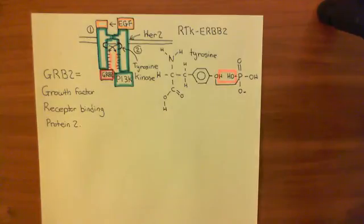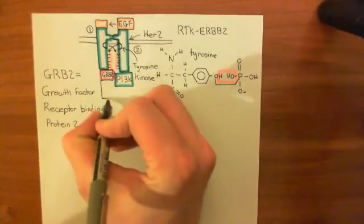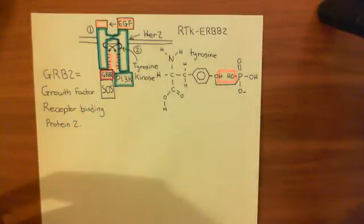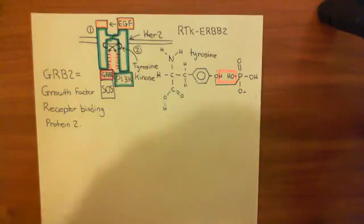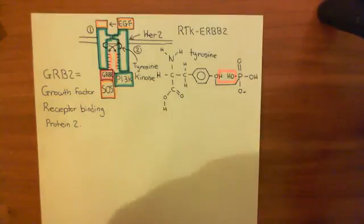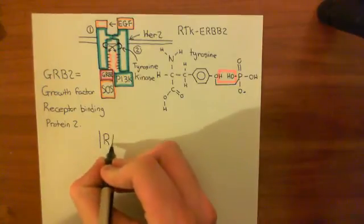The growth factor receptor binding protein 2, denoted in purple, comes and binds to the phosphorylated tyrosine residues of the HER2 receptor. Another protein can then come and bind on top of it — this protein is SOS. SOS protein activates monomeric G proteins, specifically a monomeric G protein known as RAS. Once SOS is bound to GRB2, it's going to start activating RAS. RAS is a monomeric G protein — not like the heterotrimeric G proteins we see in G protein-coupled receptor pathways.